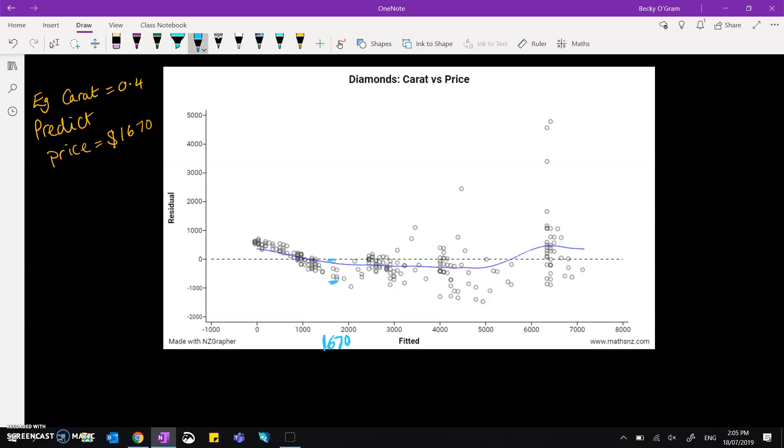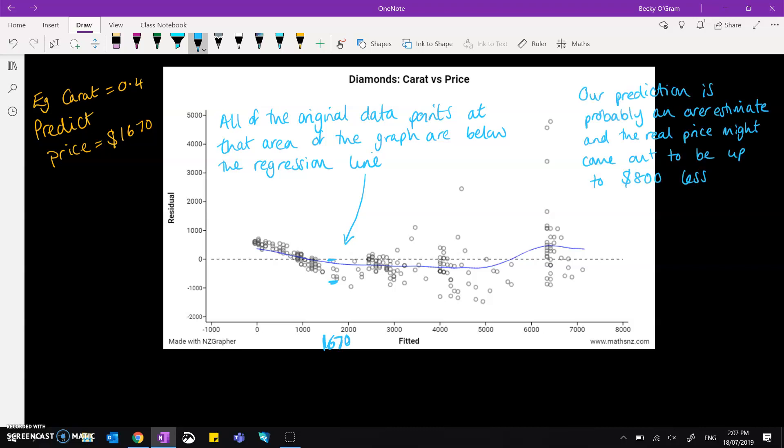So we can write a statement about that. Because the data is below what's actually being predicted at that range, our prediction is probably an overestimate, and you could give a value of how much you expect it to vary between as well. We can see those dots vary by up to about 800 below the line.